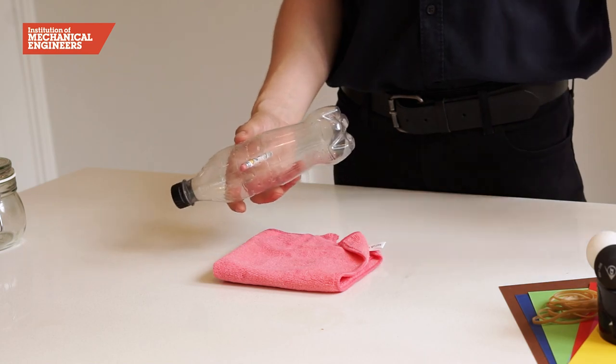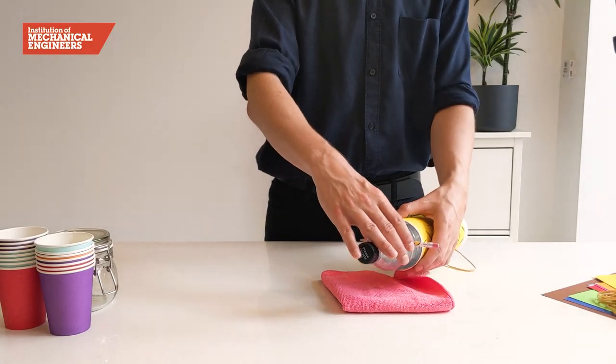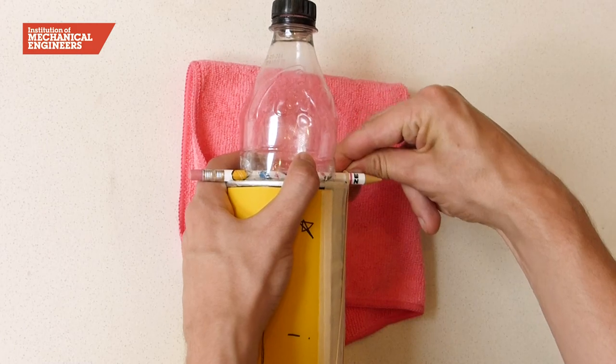In the final step, we need to assemble your cork launcher. Place the wide end of the bottle into the tube and hook the bands around the pencil.